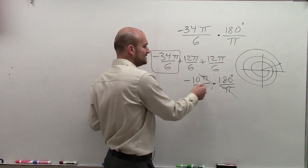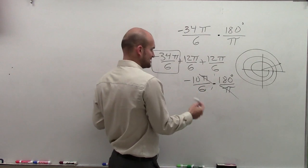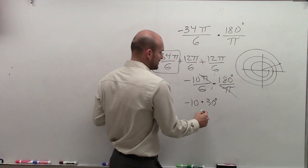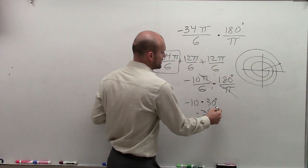And then 180 degrees divided by 6 is 30 degrees. So then I have negative 10 times 30 degrees, which is negative 300 degrees.